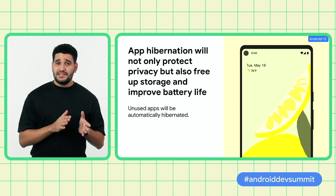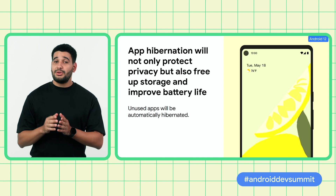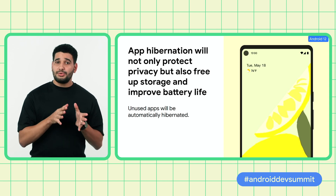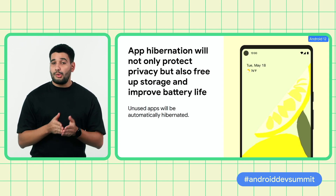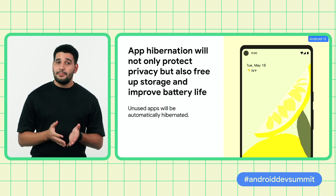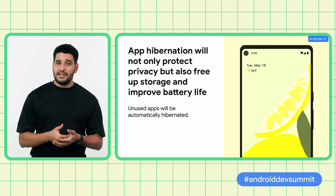This year, we're building on permissions auto-reset by intelligently hibernating apps that have gone unused for an extended period of time, optimizing for device storage, performance, and safety. The system not only revokes permissions granted previously by the user, but it also force stops the app and reclaims memory, storage, and other temporary resources. In this state, the system also prevents apps from running jobs in the background or receiving push notifications. Users can bring apps out of hibernation by simply launching them, and can disable hibernation in settings.